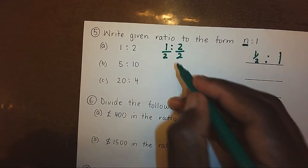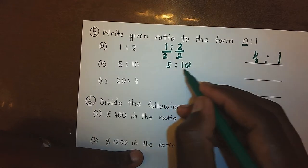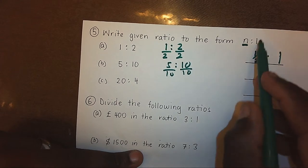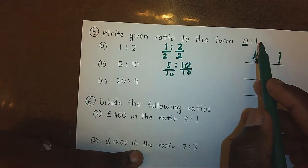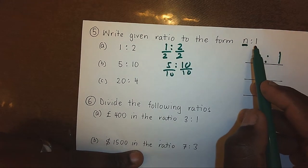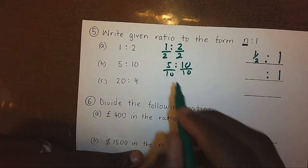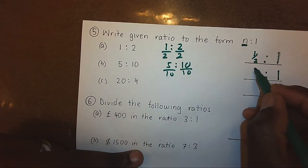In the second example, we shall divide by 10 because we want the other side to have ratio 1. 10 divided by 10, I will get 1. 5 divided by 10, I will get a half.